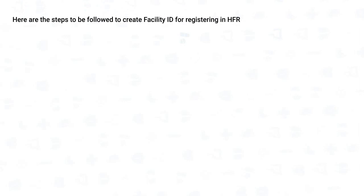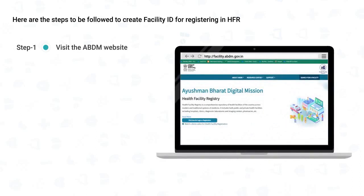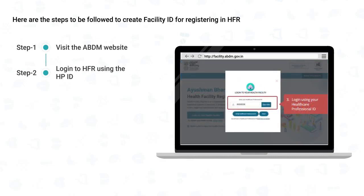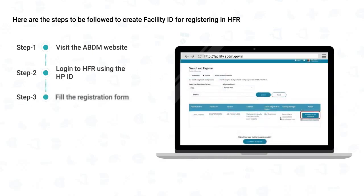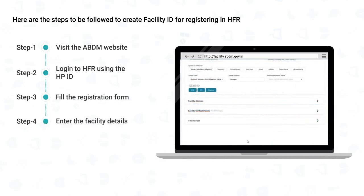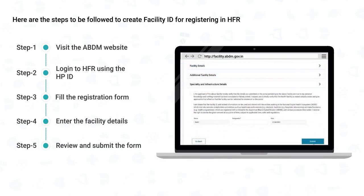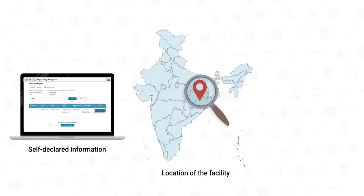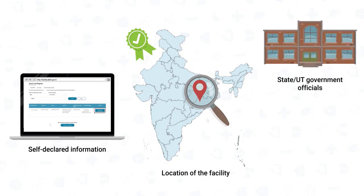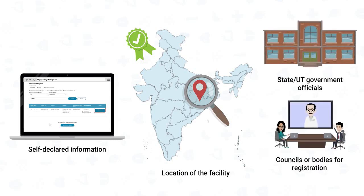To create a facility ID for registering in HFR: visit facility.abdm.gov.in; log in to HFR as a facility manager using the HPID; fill in the registration form with facility details and complete the form; review and submit the form for verification. On submission, a facility ID will be generated. All facility information is considered self-declared on submission, and the location of the facility is then verified by respective state or union territory government officials, councils, or bodies for registration.